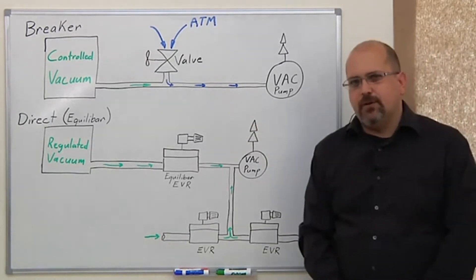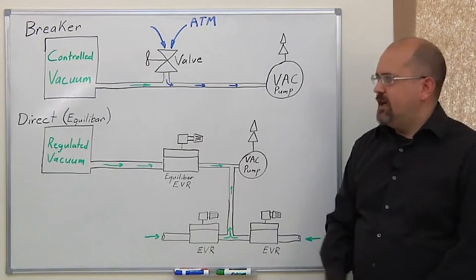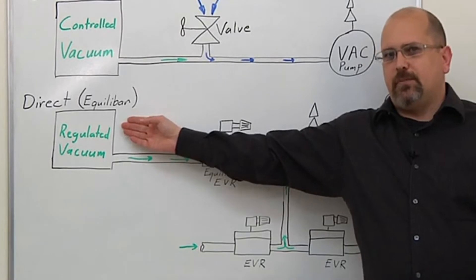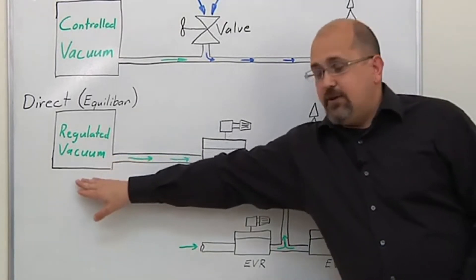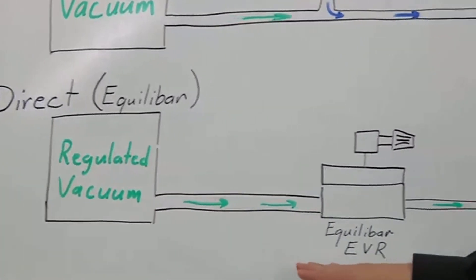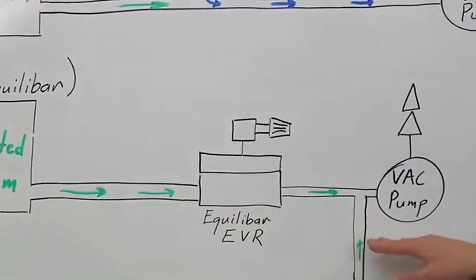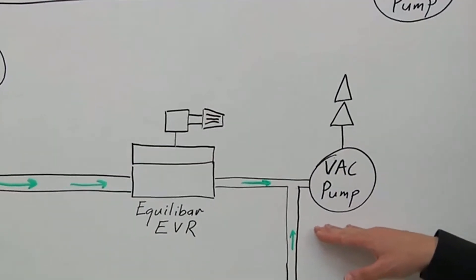The second method for controlling vacuum pressure in an application is called direct vacuum control. Direct vacuum control is what we have when we use the Equilibar products. Vacuum pressure is regulated by the Equilibar valve which modulates the amount of air that the vacuum pump is allowed to draw from the system.